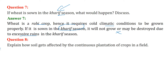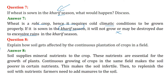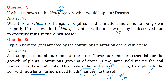Explain how soil gets affected by continuous plantation of crops in a field. Soil gives us nutrients, but plants take up all the nutrients during growth. Continuous growing of crops in the same field makes the soil poorer in certain nutrients, making it infertile. To replenish the soil with nutrients, the farmer needs to add manures or fertilizers.